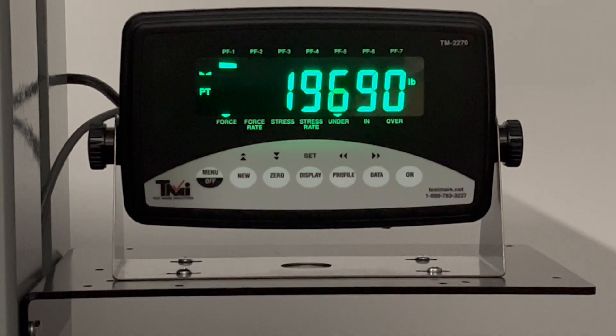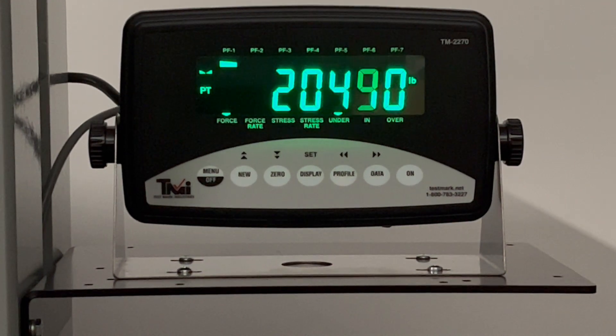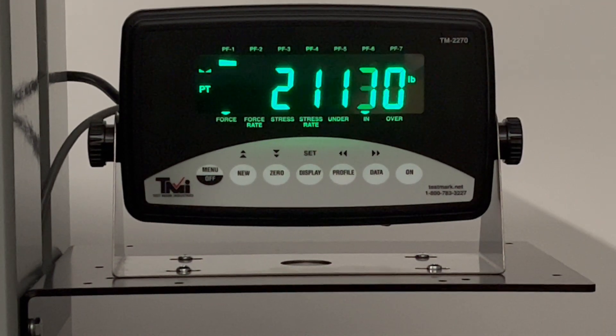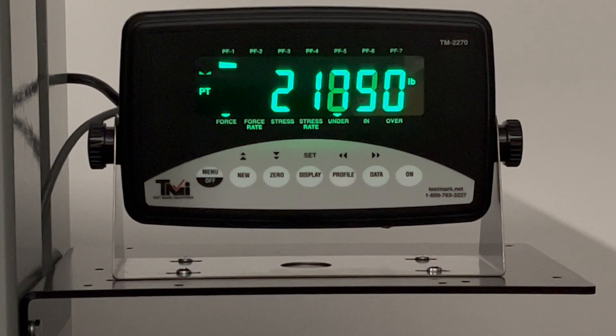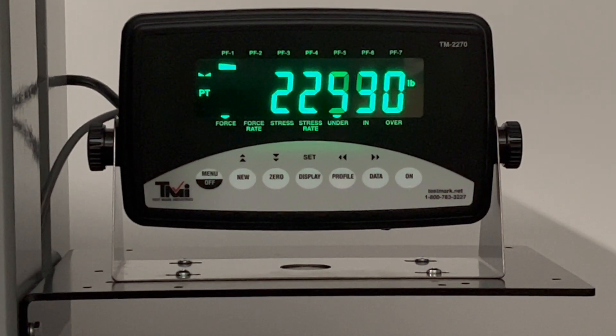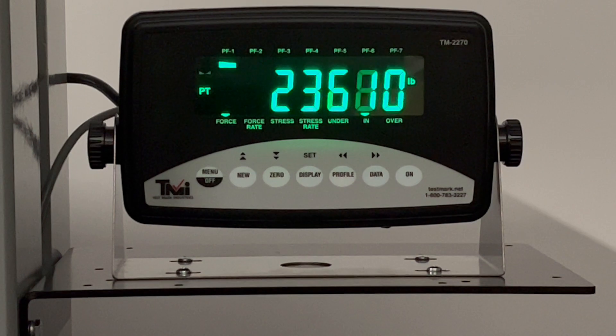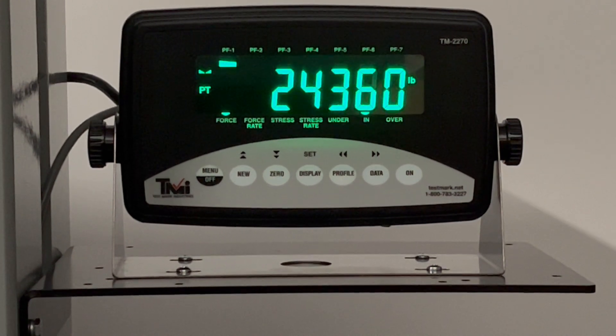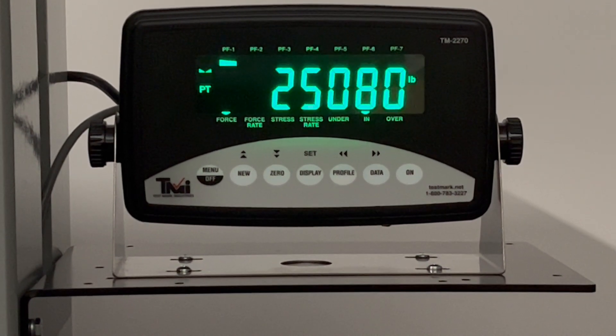As you can see on the screen, there is an under, an in, and an over indicator. If a sample is running too slow, a light comes on above the under. At the correct speed, the light is on above the in, and if it is running too fast, it is above the over.